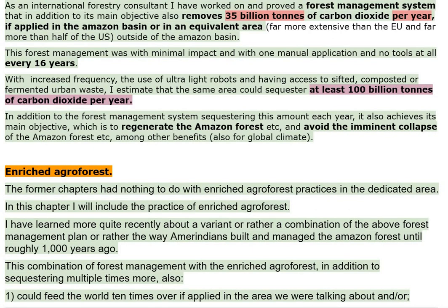With increased frequency, the use of ultra-light robots, and having access to sifted, composted or fermented urban waste, I estimate that the same area could sequester at least 100 billion tons of carbon dioxide per year. In addition to the forest management system sequestering this amount each year, it also achieves its main objective, which is to regenerate the Amazon forest and avoid the imminent collapse of the Amazon forest, among other benefits, also for global climate.